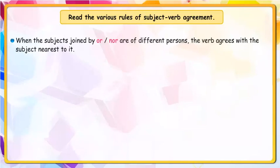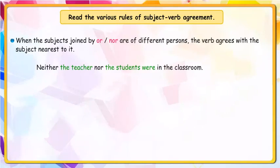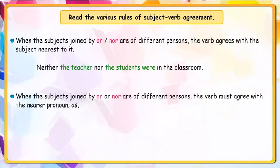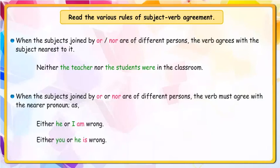When the subjects joined by 'or' or 'nor' are of different persons, the verb agrees with the subject nearest to it. For example: 'Neither the teacher, nor the students, were in the classroom.' When subjects joined by 'or' or 'nor' are of different persons, the verb must agree with the nearer pronoun. For example: 'Either he or I am wrong.' 'Either you or he is wrong.'